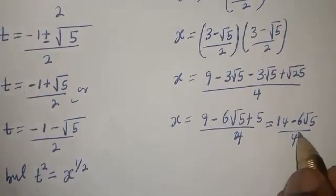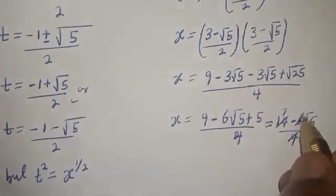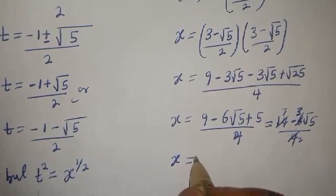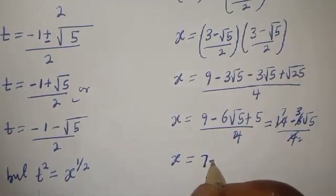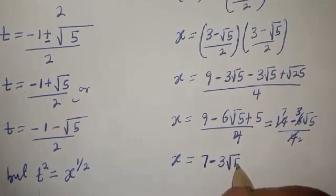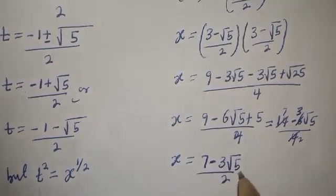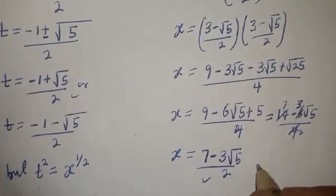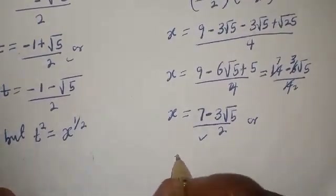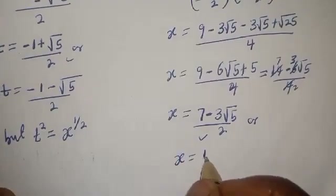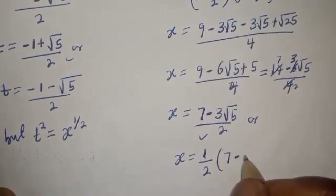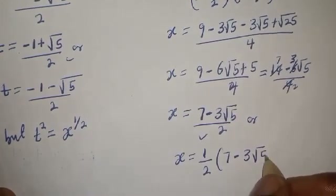Simplifying, x is equal to 7 minus 3 root 5 over 2. This is the final answer.